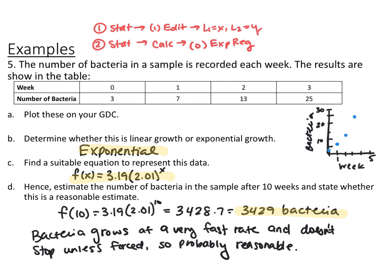Using the graphing calculator, the exponential regression function is approximately 3.19 times 2.01 to the x. Plugging in x equals 10 for 10 weeks gives an estimate of 3,429 bacteria. This is probably reasonable — bacteria grows at a very fast rate and won't stop unless forced to. When assessing reasonableness, think about whether the modeled quantity would actually continue to grow to that extent after 10 weeks. This concludes exponential functions and modeling with exponential functions.